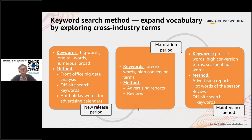During the maintenance period — when your listing is well optimized — go in bi-weekly to look for high conversion search terms or seasonal trends. For example, around Christmas or other peak seasons, you may want to update your listing with relevant seasonal keywords.